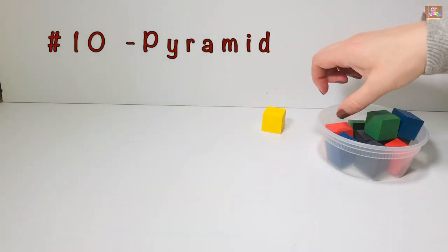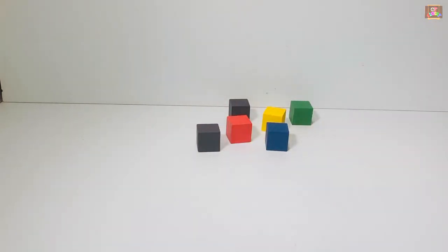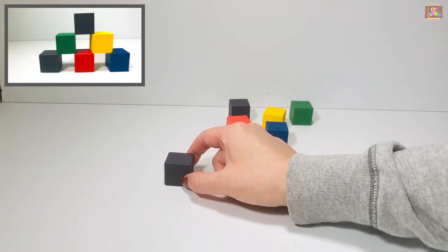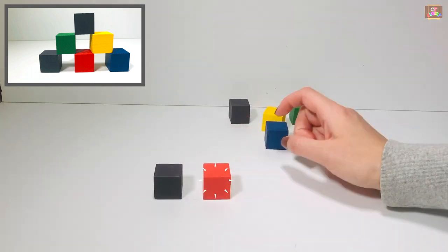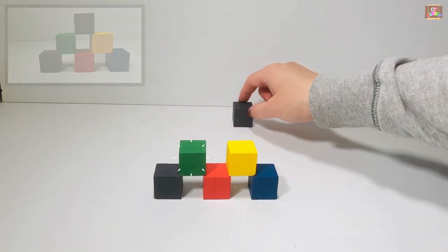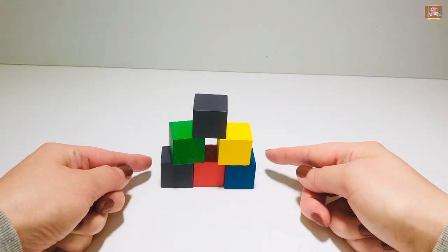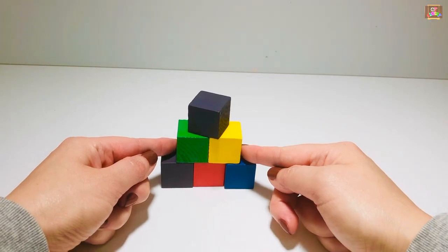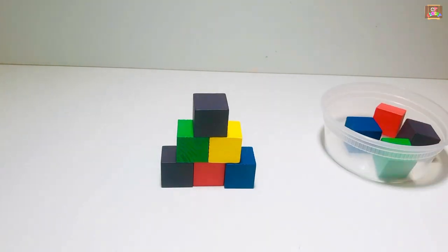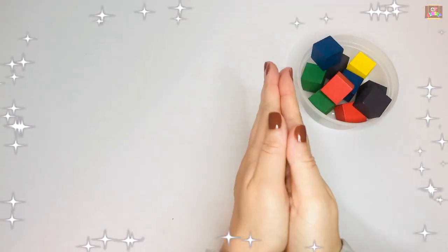For game number 10, get six blocks to build a pyramid. Use both hands and push the blocks together, but be careful don't make it fall. Use the tongs and clean them up. Great job guys, now it's time for Kinder Egg.